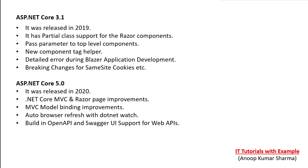ASP.NET Core 3.1 was released in 2019 and has partial class support for Razor components. It allows passing parameters to top-level components and introduces a new component tag helper. It provides detailed error information during Blazor application development and includes breaking changes for same-site cookies.